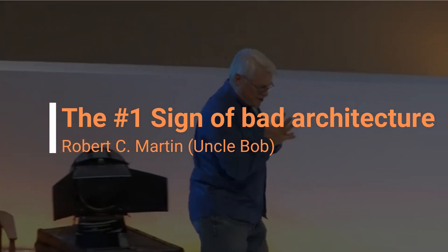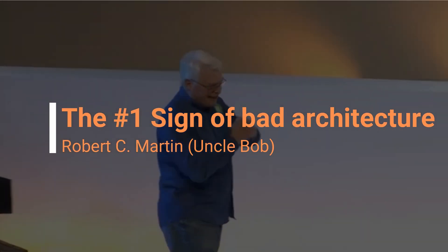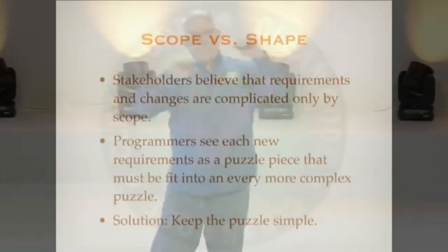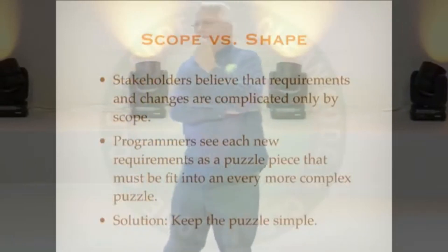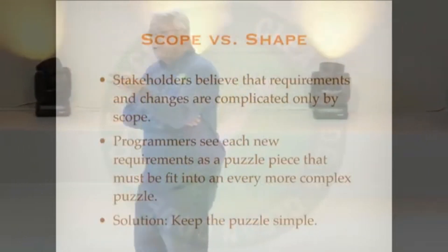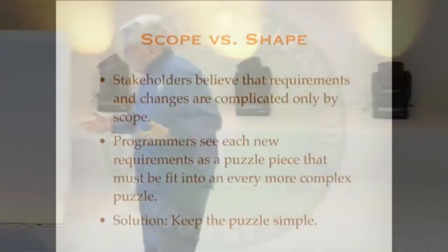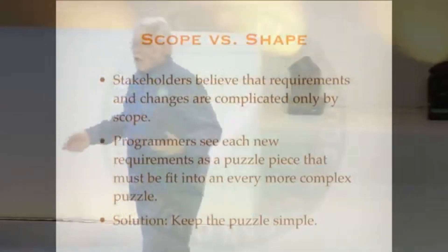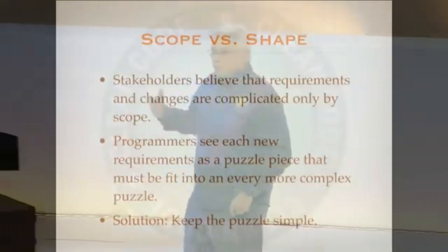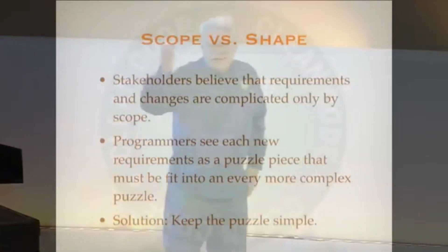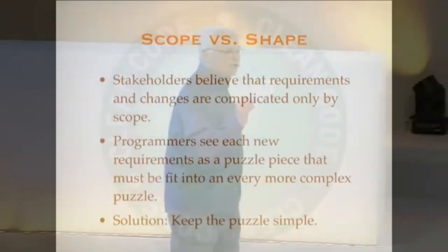Stakeholders in software systems believe that requirements and changes are complicated only by scope. A stakeholder can understand that certain changes are big and that other changes are small, and they believe that the cost of changes will be proportional to that scope. Big change should cost a lot; little change should cost a little.